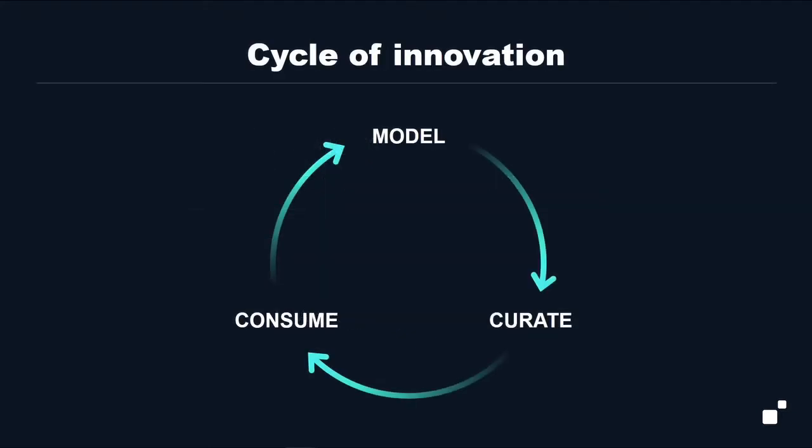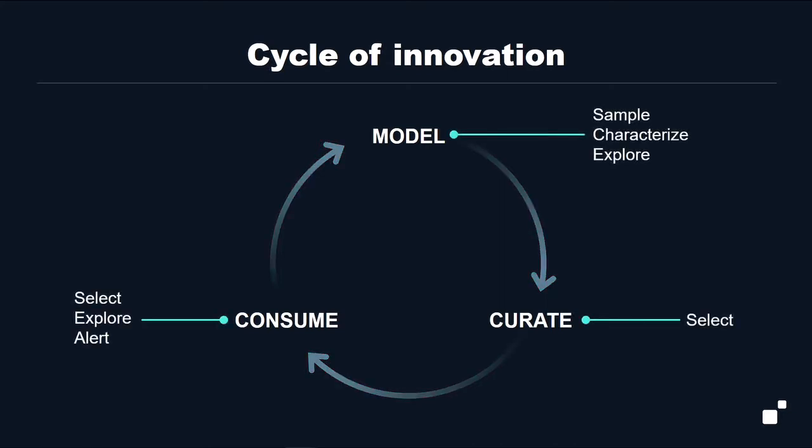So how do these activities map onto the phases of your innovation cycle — modeling, active curation, and consuming? Roughly like this: modeling is about sampling, characterizing, exploring — understanding your data and using search to do that. The active curation phase is mainly around selection — selecting the data to bring in. And consuming is selection — certainly your main operational access — but also exploration, like the sanctioned Russian oligarch case, and alerting.